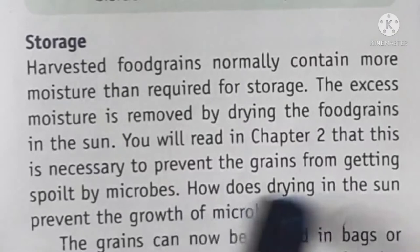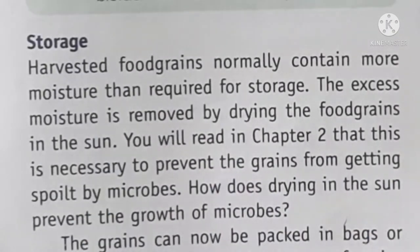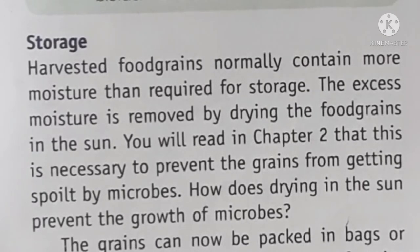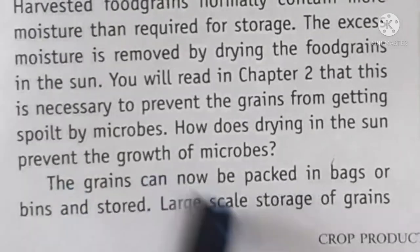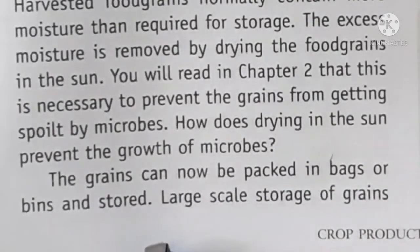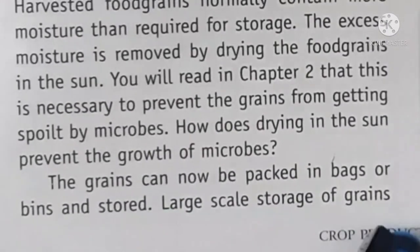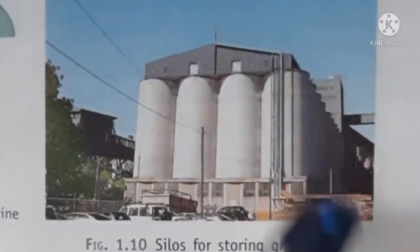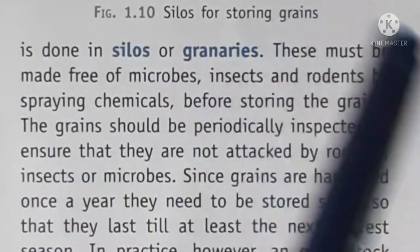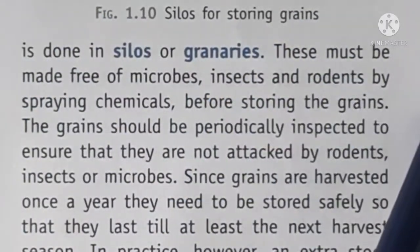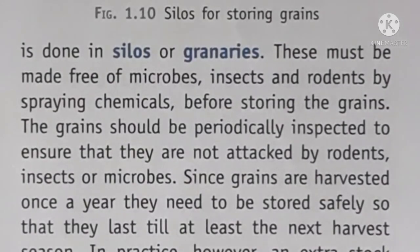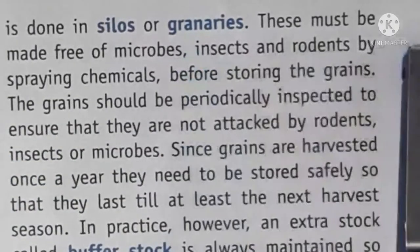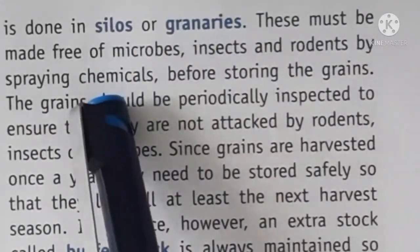Drying in the sun prevents microbe growth because microbes need two conditions to develop: moisture and warm temperature. When moisture is removed by drying, microbes cannot develop. The grains are then packed in bags and bins and stored in large containers — silos or granaries. It must be made sure that these silos and granaries are free from microbes, insects, and rodents. Before storing grains in silos and granaries, you can spray insecticides and pesticides to kill all those microorganisms.